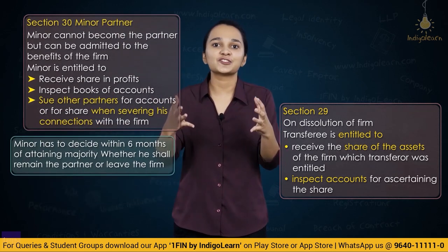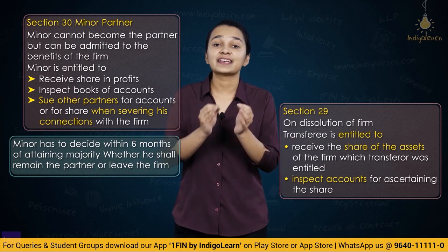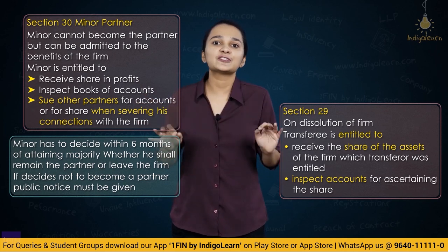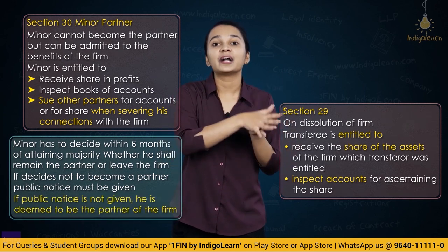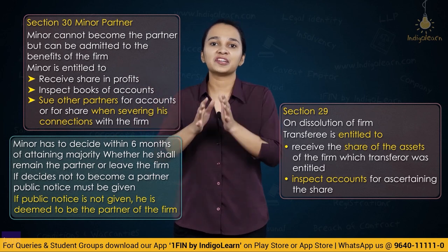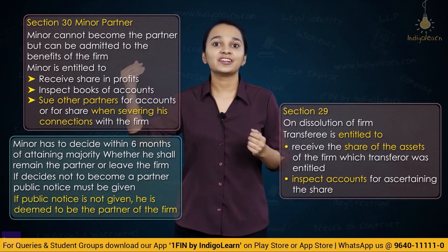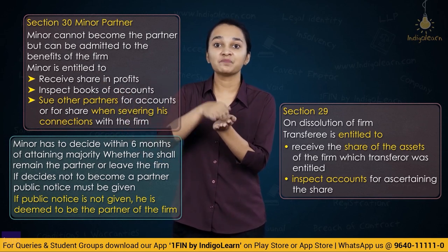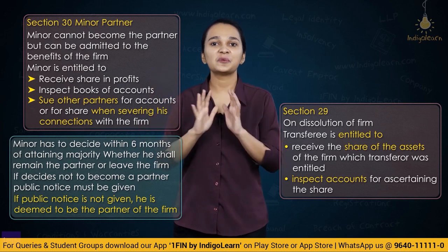A minor will not be declared insolvent even if the firm becomes insolvent. On attaining majority, the minor has six months to decide whether to become a partner. If he decides not to, he must give public notice within six months. If he fails to give notice, it is deemed he has become a partner, and he will be personally liable for all things from the time he was admitted to benefits of the firm. If he decides not to become a partner, his rights and liabilities remain as they were when he was a minor, and he is entitled to receive his share in profits.